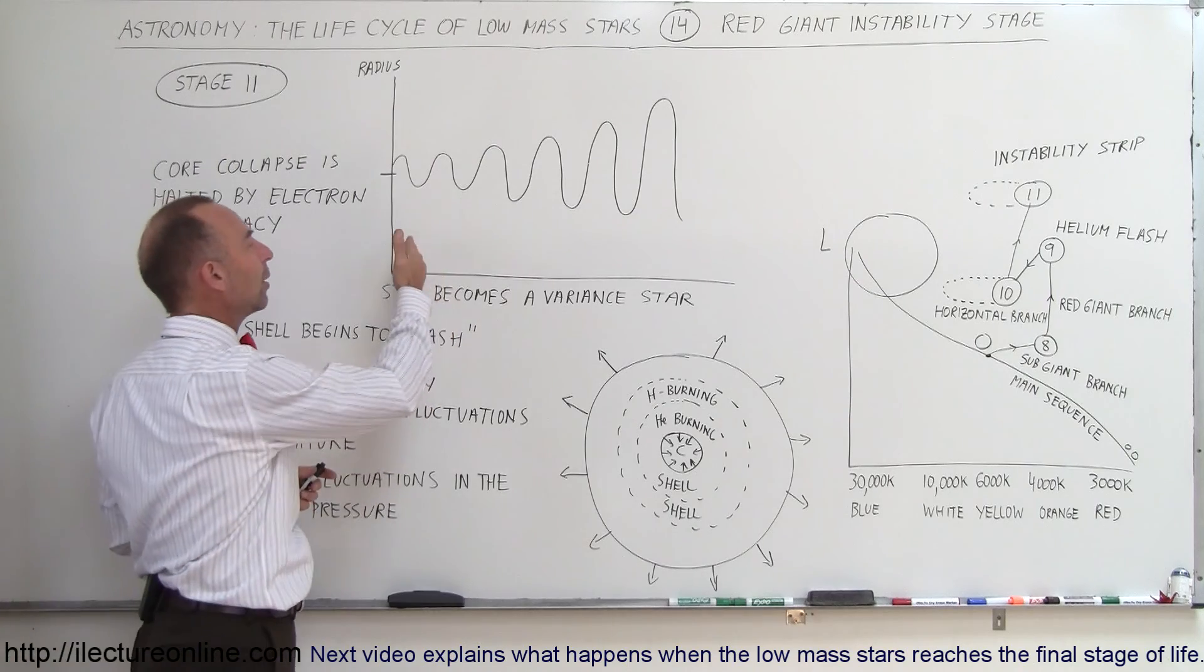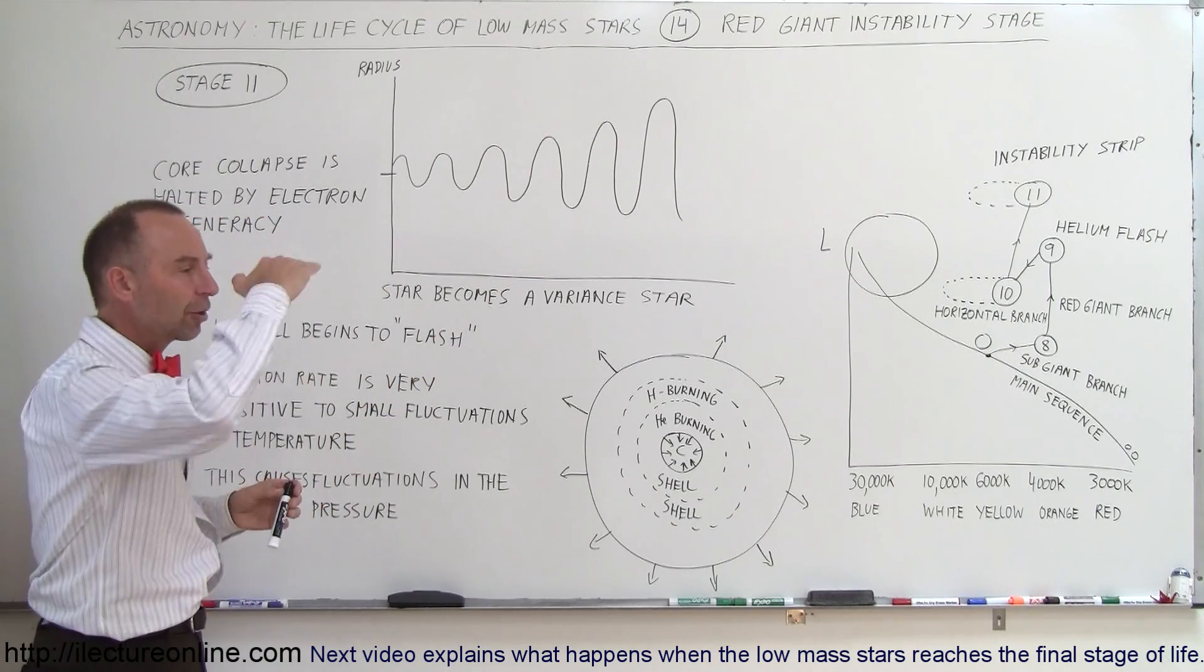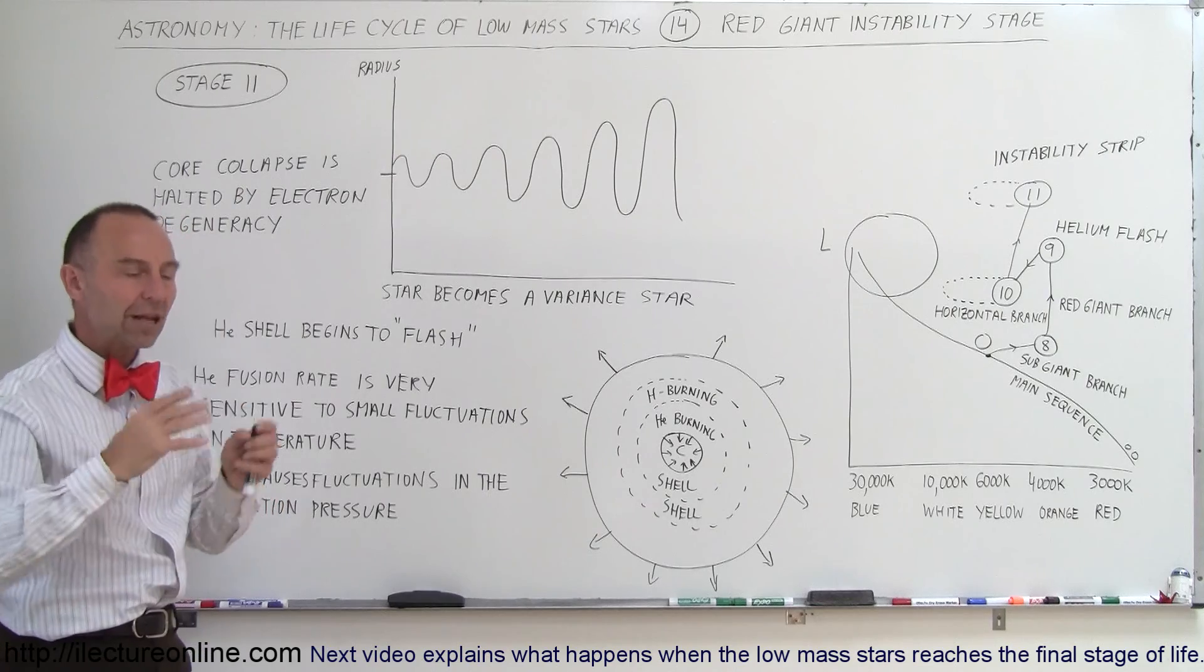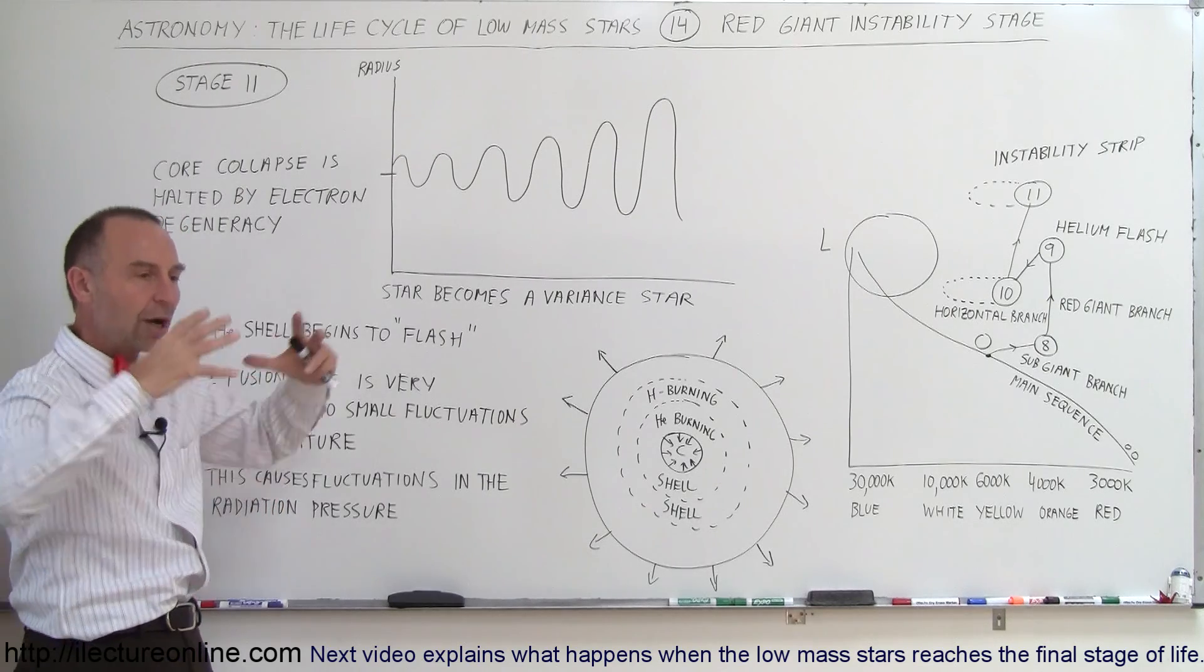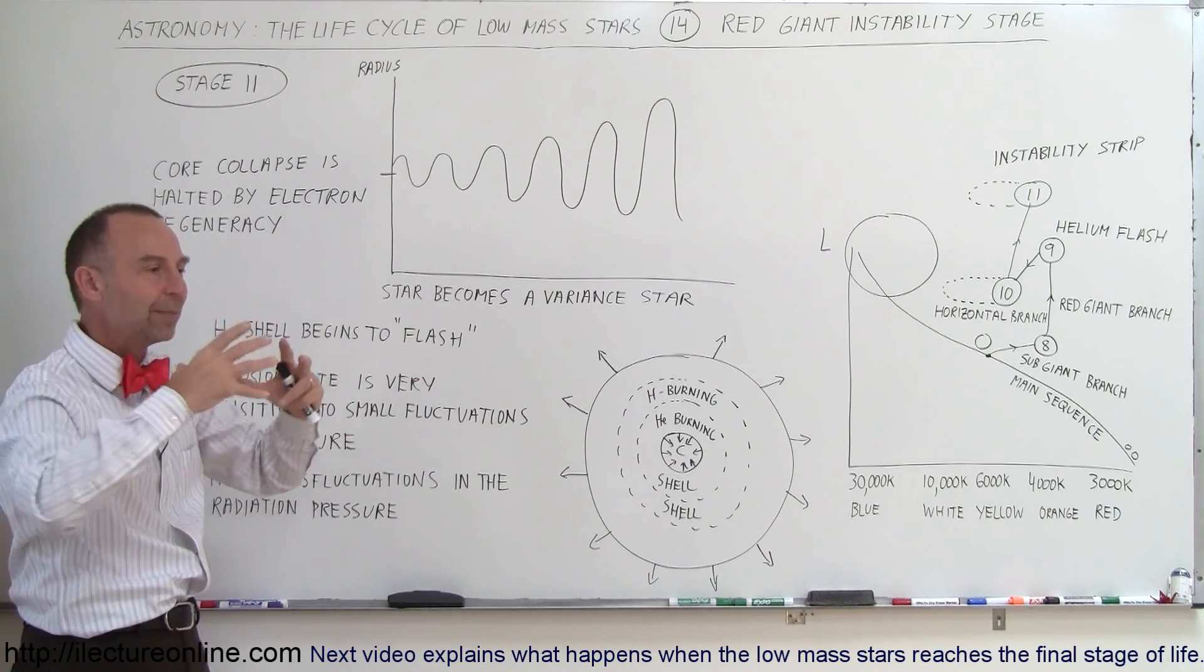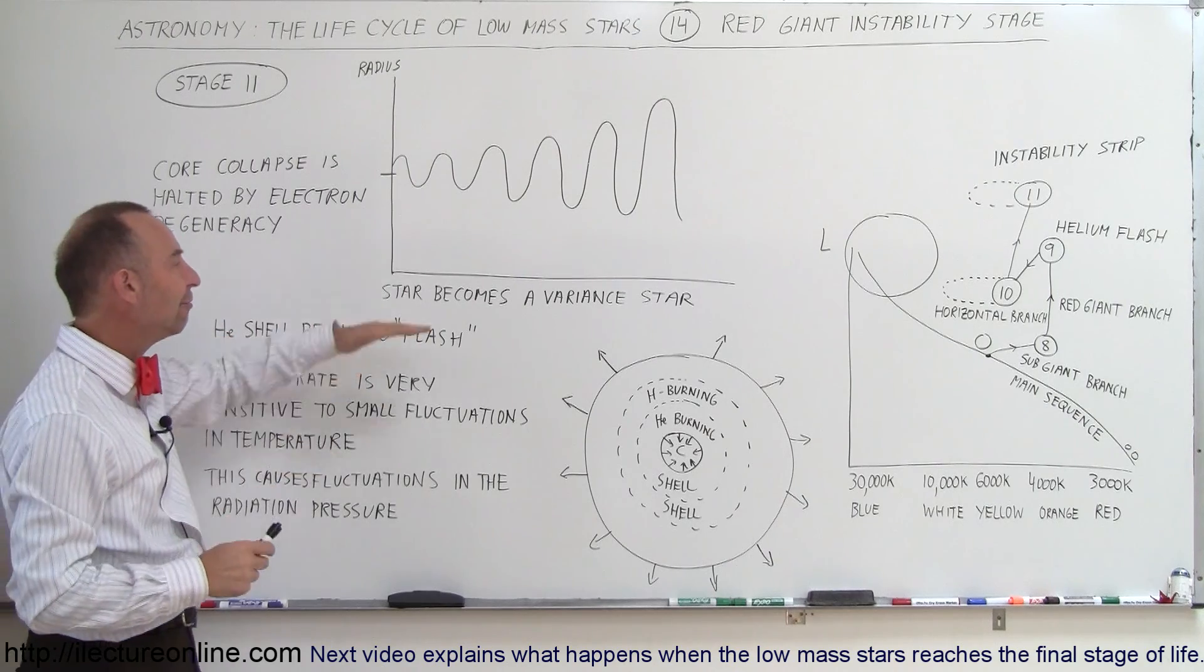Many of them are anywhere between a one and a hundred day period in the fluctuation of the intensity of radiation coming from inside the star, causing the size to fluctuate. It becomes what we call a variable star.